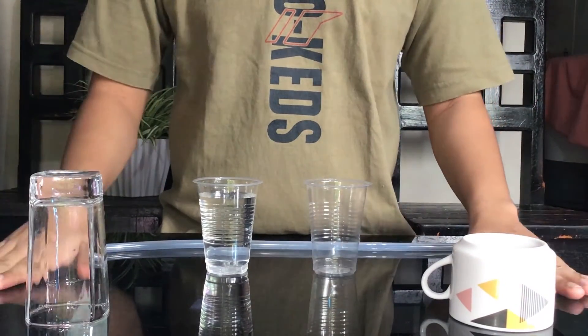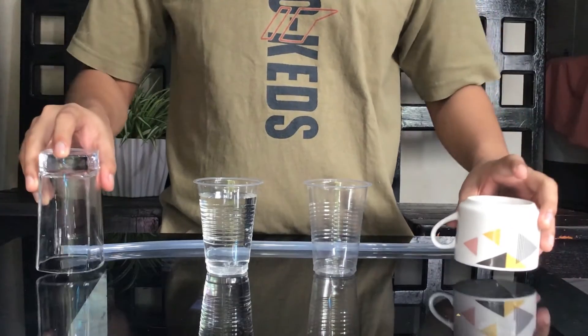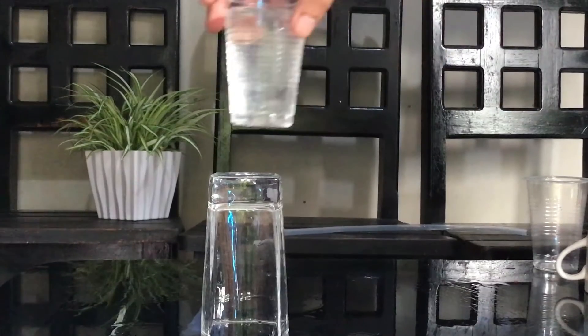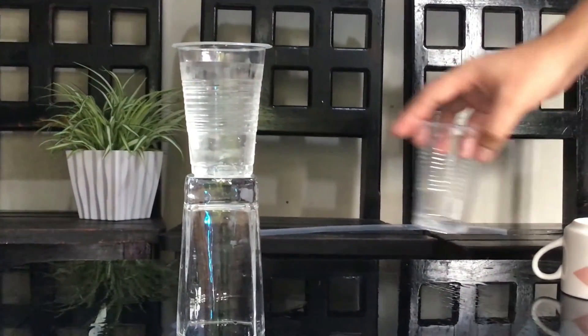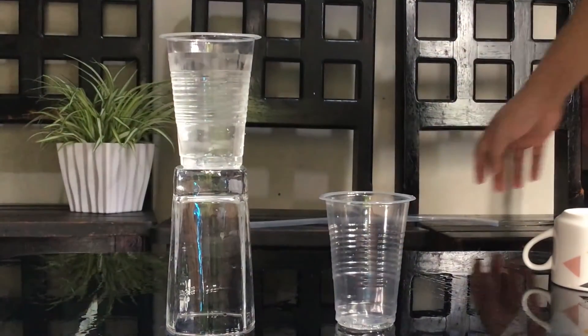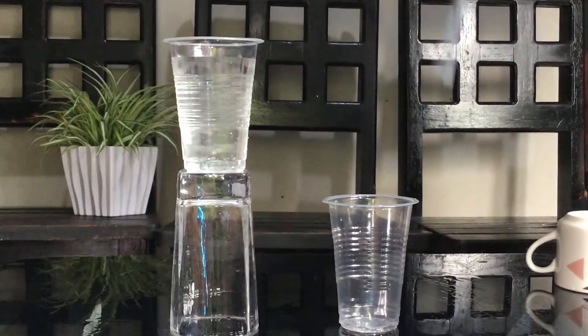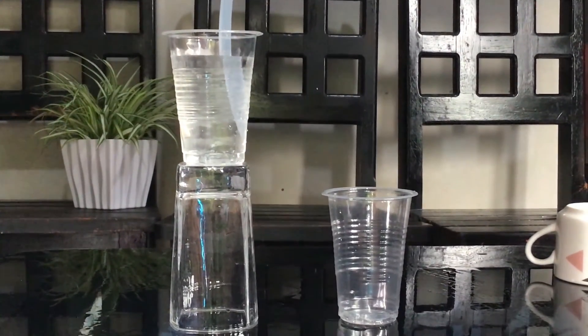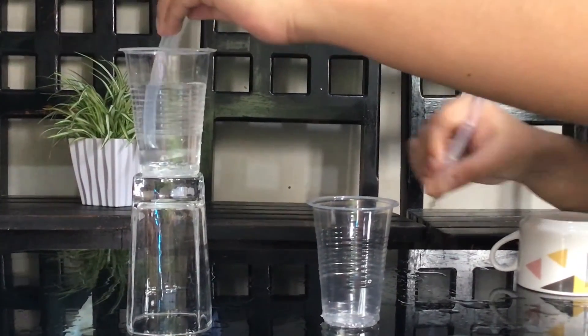Take a container filled with water and stack it on top of an object for elevation. Place an empty container beside the object used for elevation. Take a tube and dip one end in the container with water.